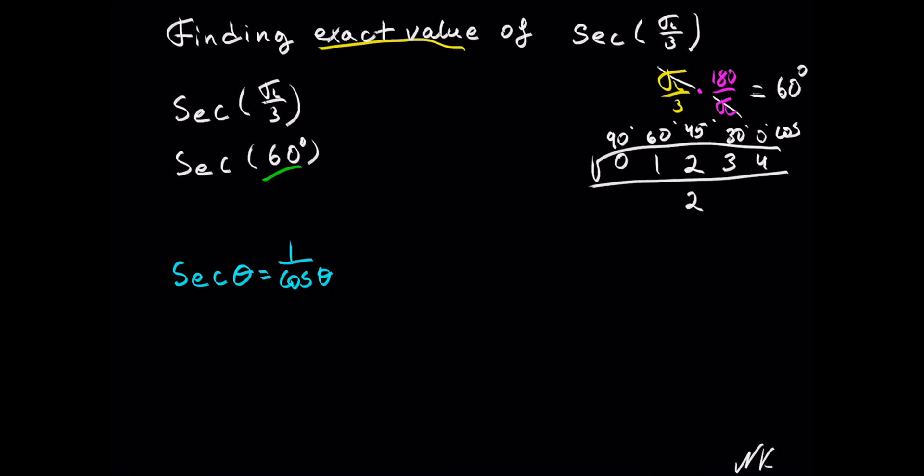Since I'm looking for secant of 60 degrees, I need to look for its reciprocal, which is cosine of 60 degrees, because we will take 1 and divide it by cosine of 60 to get our exact value for secant of 60 degrees.